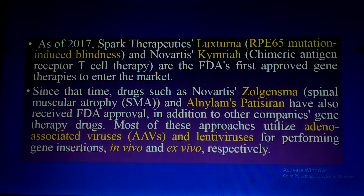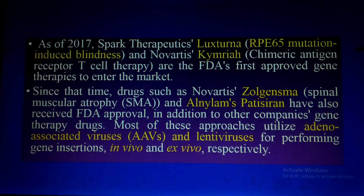Available gene therapies include: Luxturna, which contains the RPE65 gene — RPE stands for retinal pigment epithelium — and is injected into the human retina to treat retinal disorders. The second is Novartis's CAR-T (Chimeric Antigen Receptor T-cell) therapy, the first FDA-approved gene therapy to enter the market. The third is Zolgensma, used for spinal muscular atrophy. Elivaldogene patistrogene has also received FDA approval. Most of these approaches utilize adenoviruses and lentiviruses for gene insertion in vivo and ex vivo respectively.